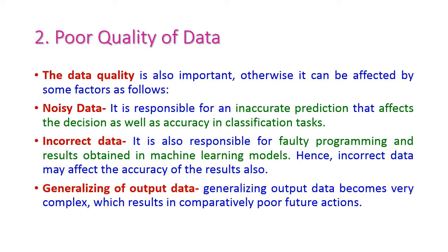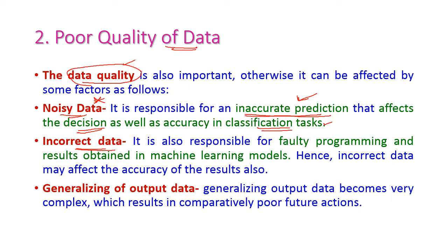Like data quantity, data quality is also very important. If noisy data is included in the training data, the model will produce inaccurate predictions, which affects decision making and classification tasks. We have to avoid noisy data. If incorrect or errored data is included, the program will produce faulty output. Hence, incorrect data may affect the accuracy of the result. Generalizing the output data becomes very complex, resulting in comparatively poor future actions. The output should be a specialized one for the particular problem.